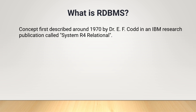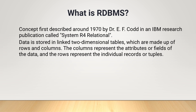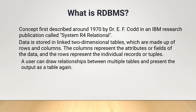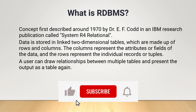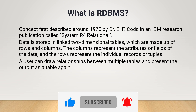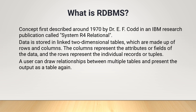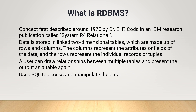These are the most common types of databases and are used in a wide range of applications. In a relational database, data is stored in linked two-dimensional tables which are made up of rows and columns. The columns represent the attributes or fields of the data and the rows represent the individual records or tuples. A user can draw relationships between multiple tables and present the output as a table again. A user of a relational database need not understand the representation of data in order to retrieve it. Relational databases use SQL to access and manipulate the data.